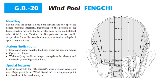The vertebral artery is located at a depth of approximately 4 cm. Actions and indications: eliminate wind, benefits the head, clears the sensory organs, opens the channel. With tonifying needle techniques, strengthens the marrow and the brain, according to Ma Shao Shop.